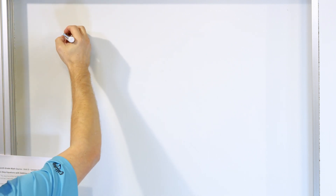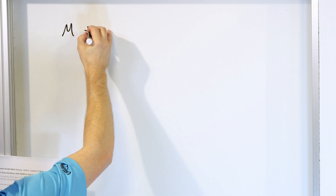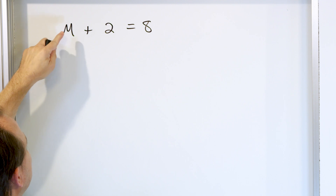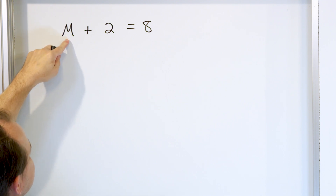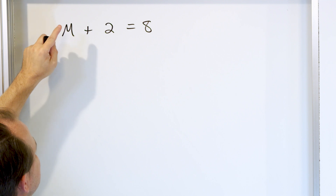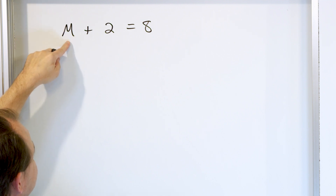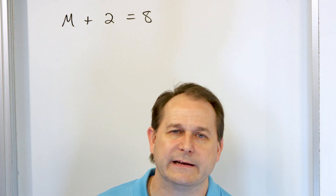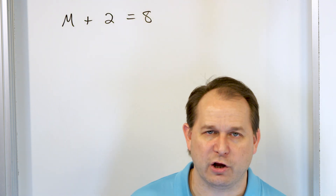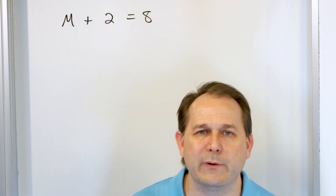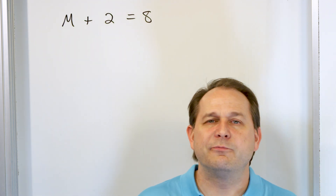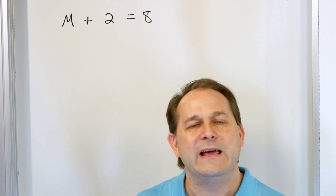Let's take an equation. Here we have the variable M, plus 2 equals 8. What does this equation actually mean? It means there's some unknown quantity. Here M is going to represent the amount of dollars that I have in my bank account to start with. It might represent a situation like: you have M dollars to start in your bank account, then you receive two extra dollars, after which you have a total amount of money of $8. How much money did you initially start with in your account?